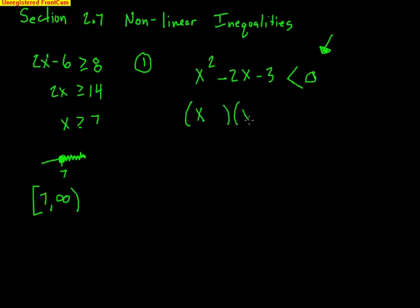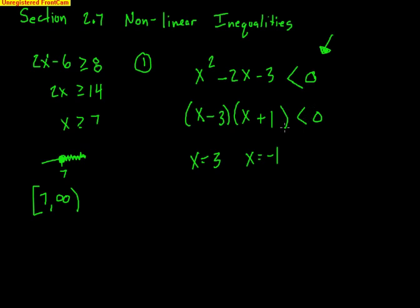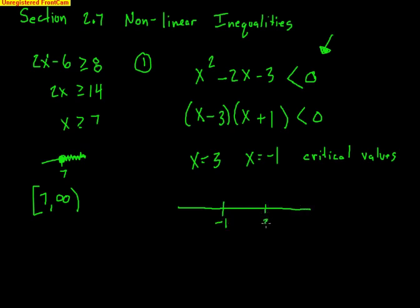If you can't factor, this section might be difficult. I need a 3 and a 1 — that's going to be a negative 3 and a positive 1, so that the inside and outside terms make negative 2. If this were an equation, we'd say x equals 3 and x equals negative 1. But this is not an equation — it's an inequality. So these are not solutions; these are what we call critical values. Critical values create test intervals for us. We make a number line, put them on it in order, and test those intervals.